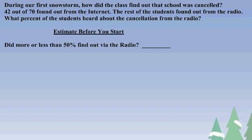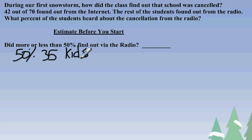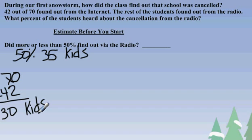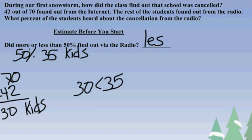Remember, let's estimate before we start. I ask myself this question: did more or less than 50% of the kids hear about the cancellation on the radio? Let's say that 50% of the kids did — that would have been about 35 kids. There are 70 kids altogether, and 42 heard about it on the Internet, so that's roughly 30 kids who heard about it on the radio. 30 is less than 35, so I know that my percent of kids who found out about the cancellation on the radio should be less than 50%.